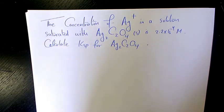It says the concentration of silver ion in a solution saturated with Ag2C2O4 is 2.2 times 10 to the power of negative 4 molar. Calculate Ksp for Ag2C2O4.